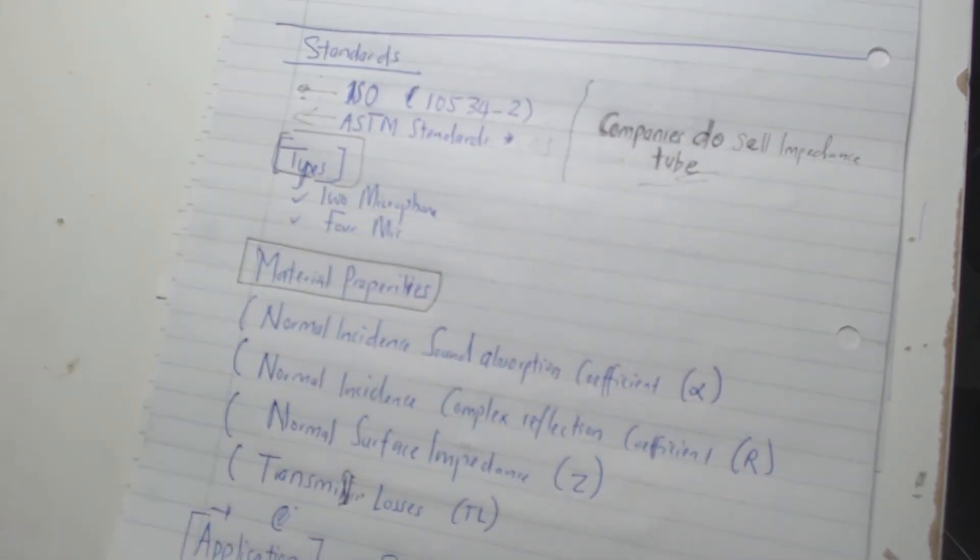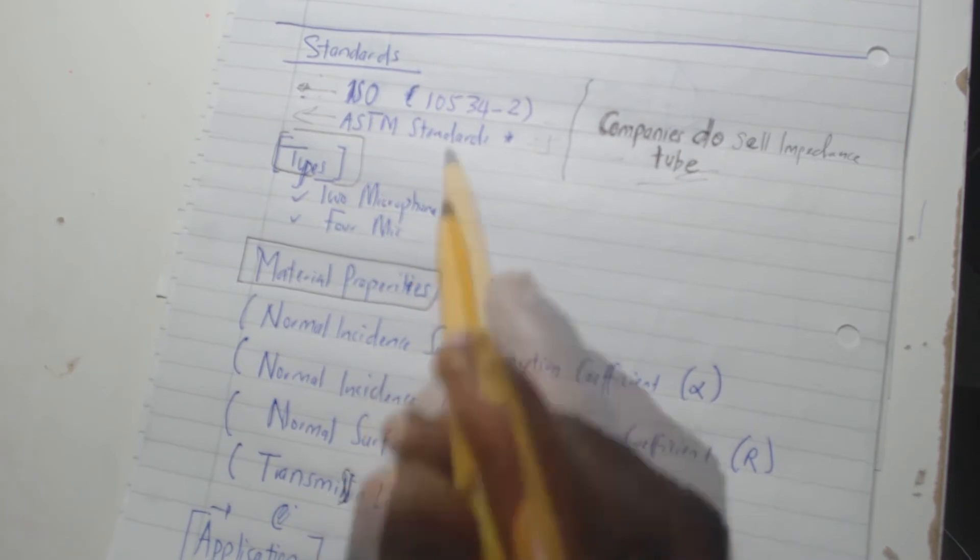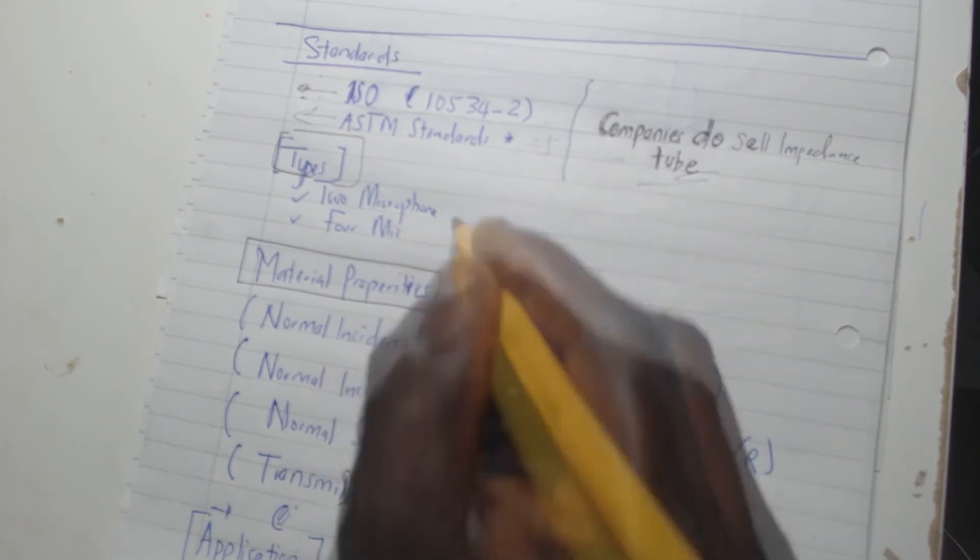All right, moving to the impedance tube types. We have two types, maybe more actually, but for me just to mention, I did my project in acoustics and testing of materials, specific type of materials which I can't disclose here. The impedance tube I used was a two microphone impedance tube.